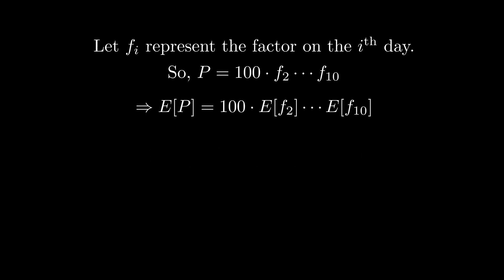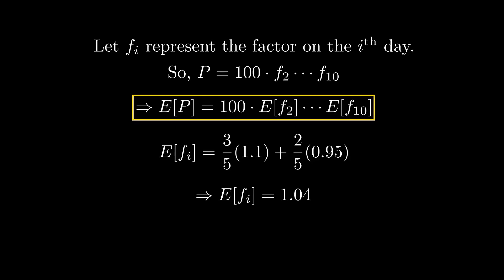Let's calculate the expected value of the factors. The expected value of fi is given by this equation. The first term represents the increase with a factor of 1.1 and a probability of 3/5. The second term represents the decrease with a factor of 0.95 and a probability of 2/5. So the expected value of fi is 1.04. Using this equation and the calculated expected value of the factors, we get the expected stock price of $142.33 at the end of day 10.